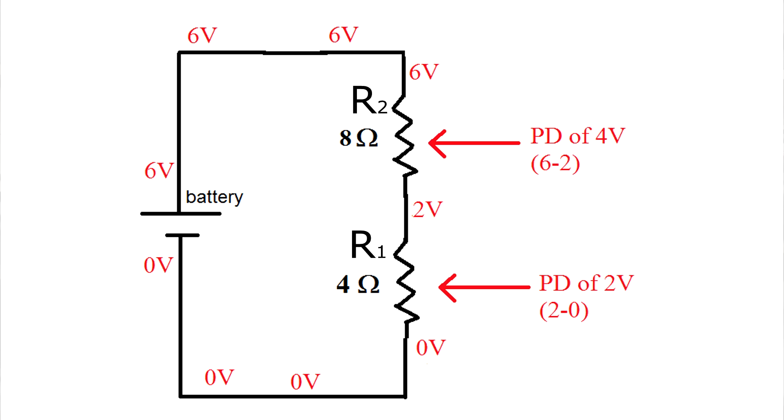Now, if instead of being identical, one of those resistors was stronger, one has, say, double the resistance of the other, then they wouldn't use equal amounts of voltage. The one that had the biggest resistance would take up the most voltage. Since resistor two has double the resistance, it's going to take up double the voltage.